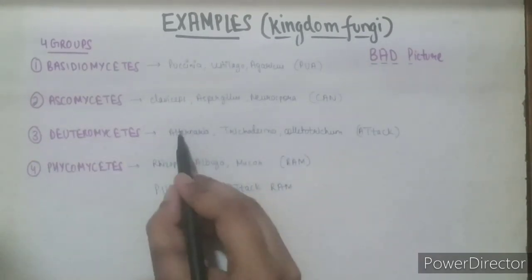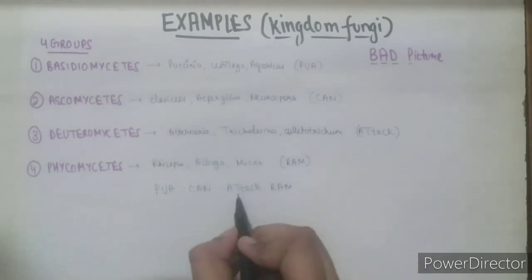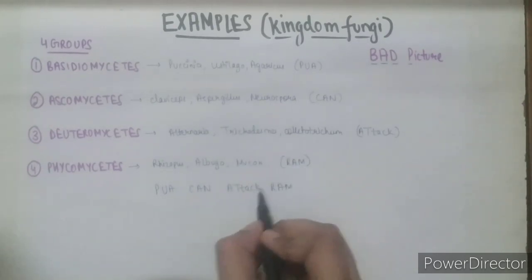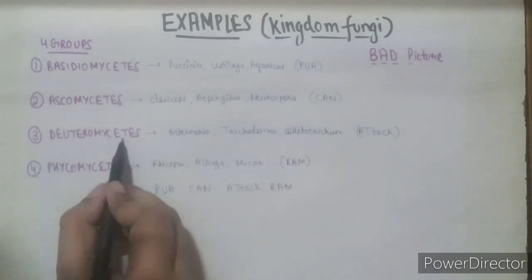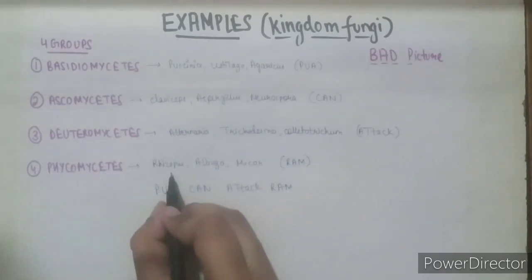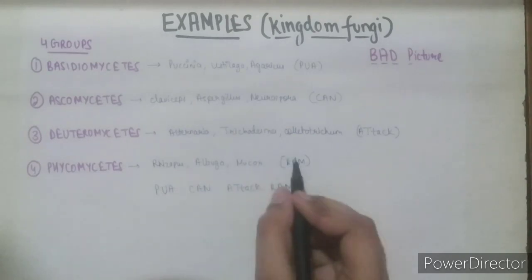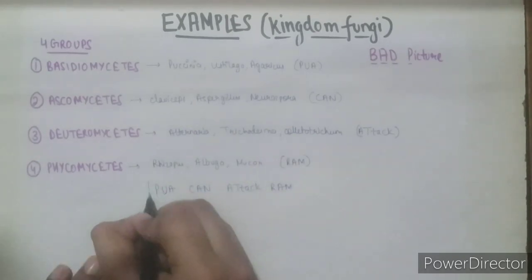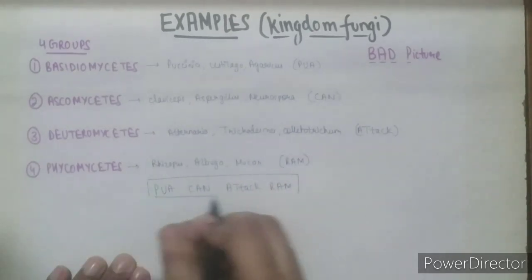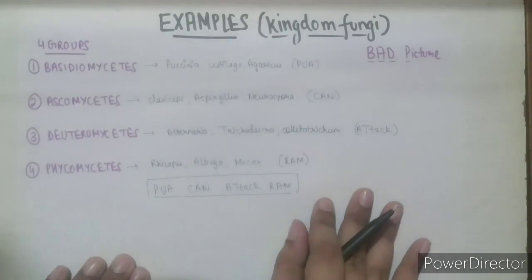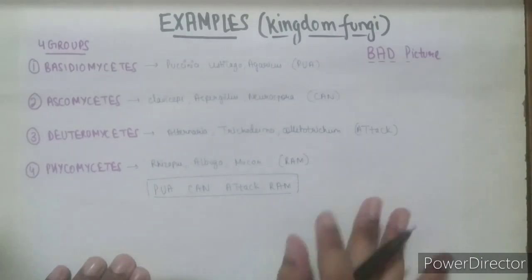A for Alternaria, T for Trichoderma, and C for Colletotrichum — which are of Deuteromycetes. R for Rhizopus, A for Albugo, and M for Mucor — which are of Phycomycetes. So, this is the trick for learning the examples of Kingdom Fungi. Thank you for watching the video. Do subscribe to the channel and like the video.